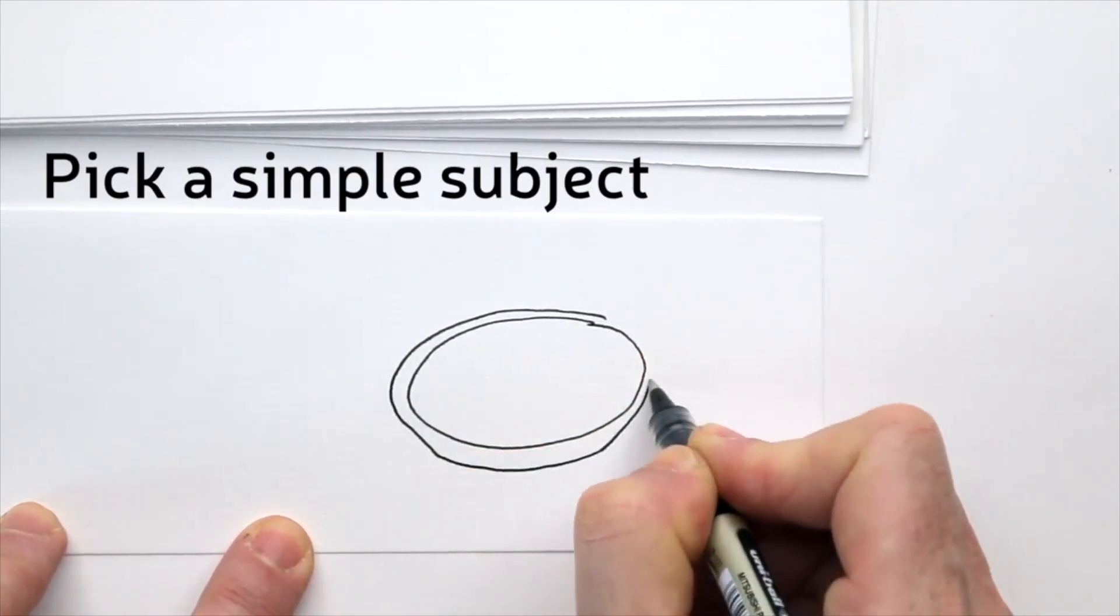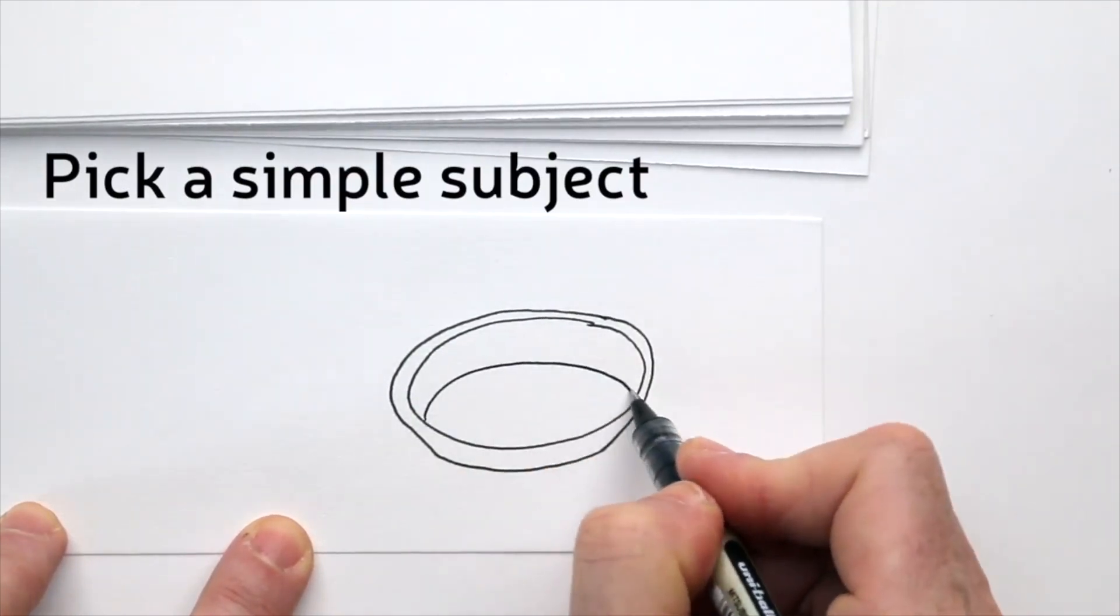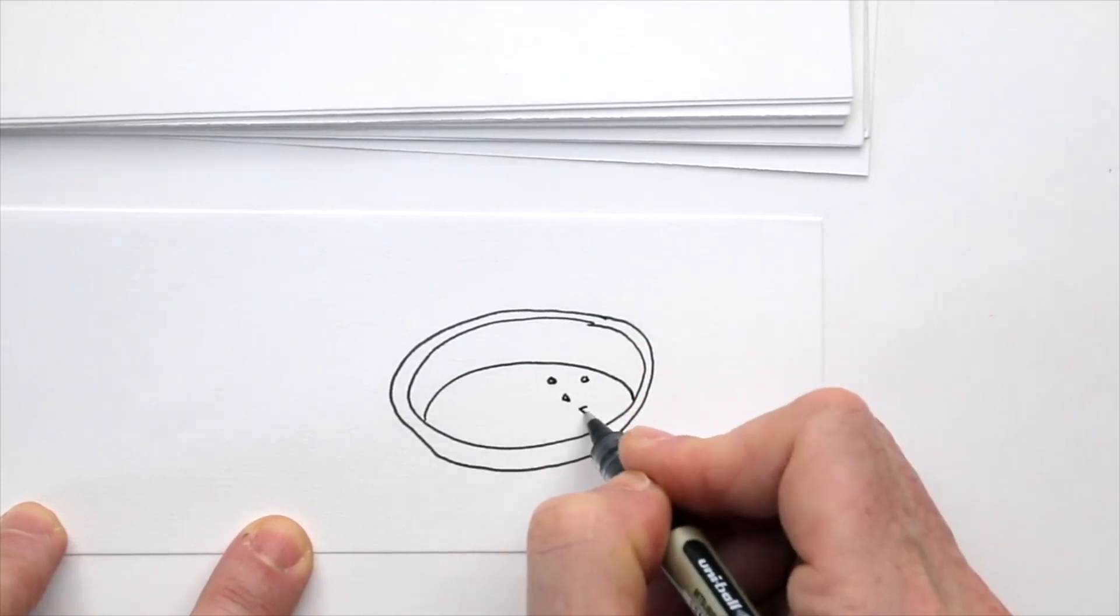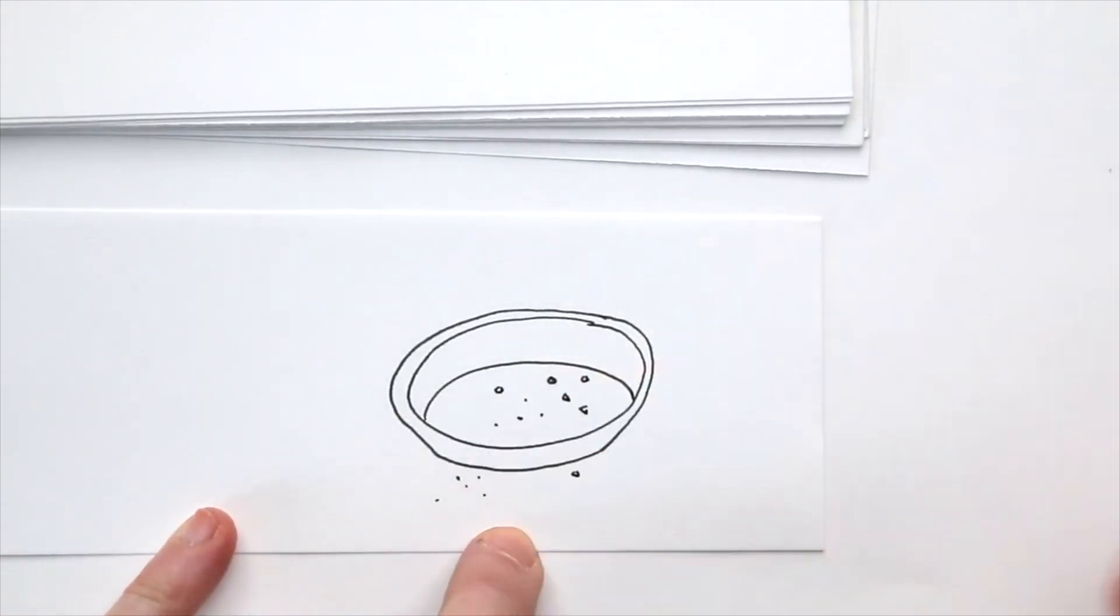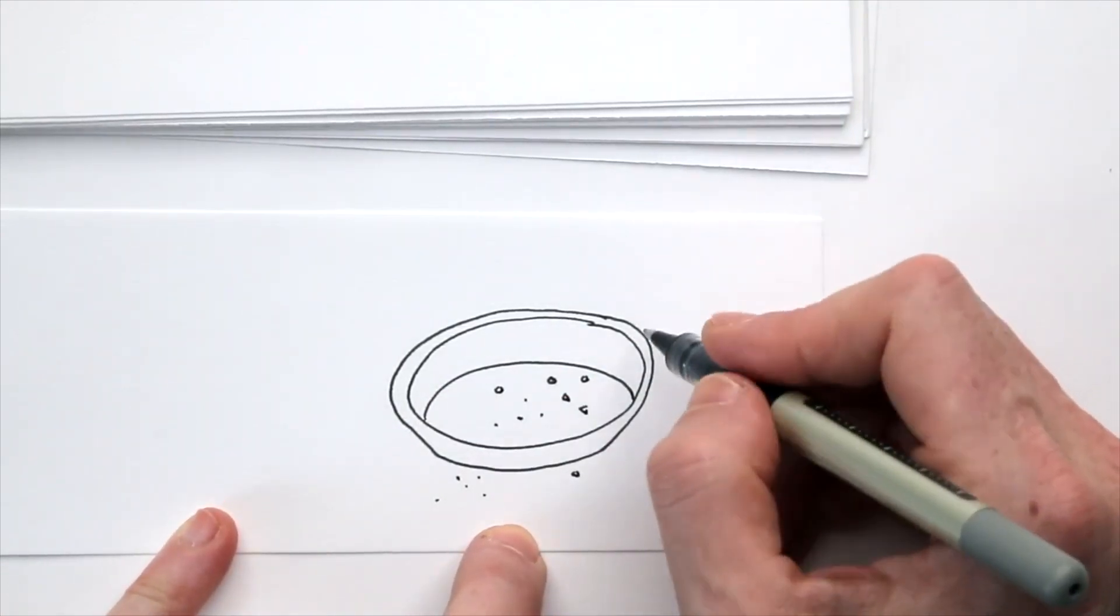For example, you can draw a simple character and make it wave. Or you could draw the sky and make clouds float by. I'm drawing my lunch. Being eaten!